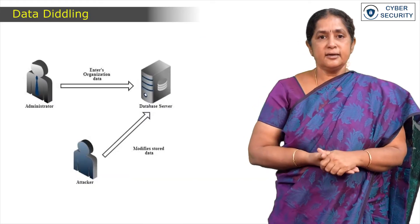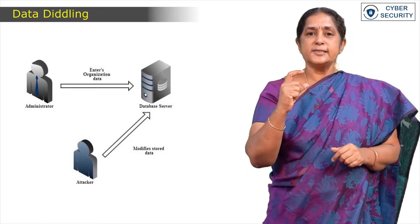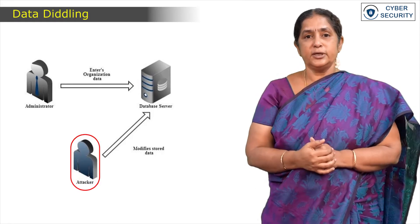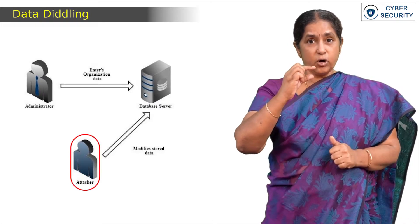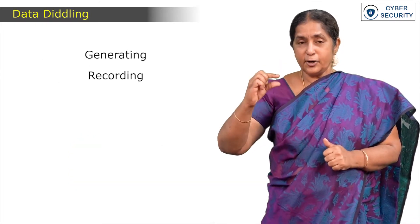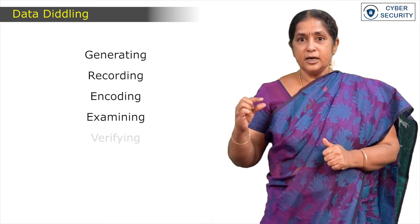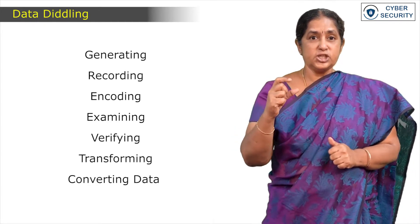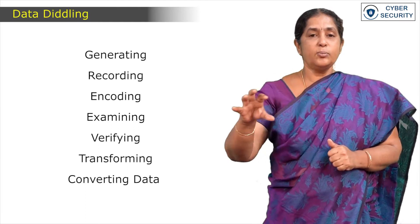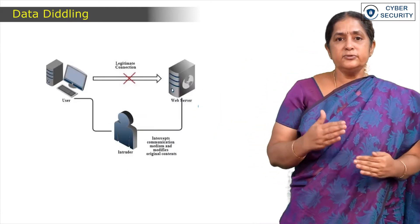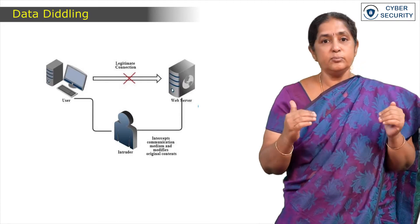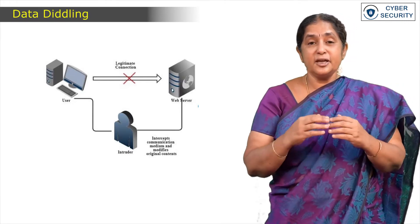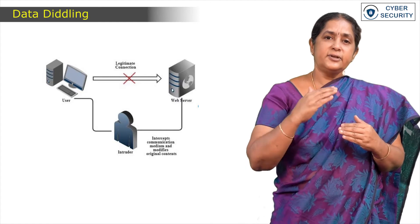Next comes data diddling. Data diddling involves the modification of data prior to or during input to a computer. The offender can be involved in the process of generating, recording, encoding, examining, verifying, transforming, or converting data by changing the expected output, which is complicated to track. One of the easiest methods of committing a computer-related crime is data diddling, because even a non-professional can carry out these types of attacks effortlessly.